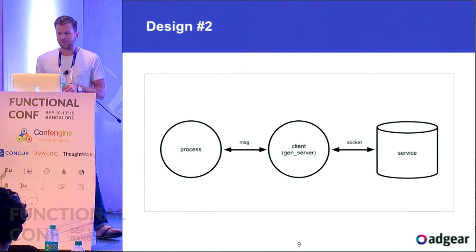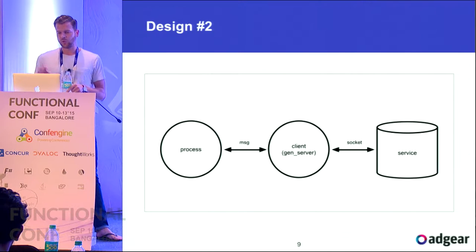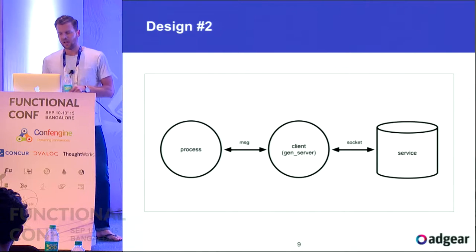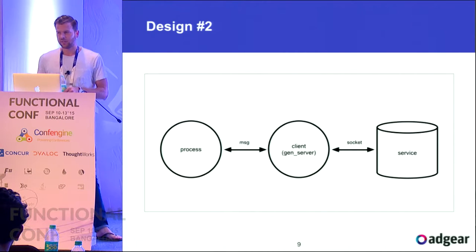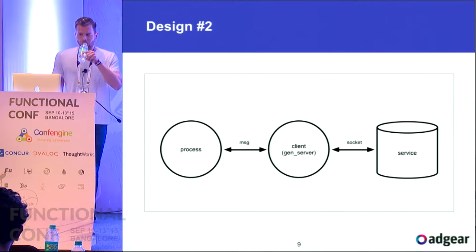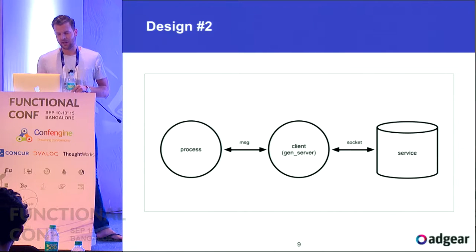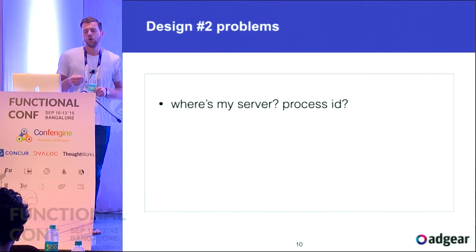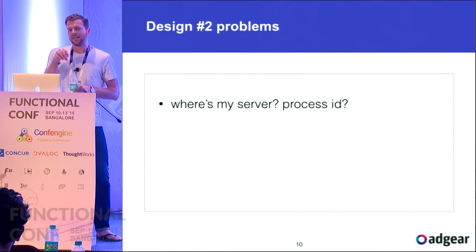To fix this, the second design uses a gen_server, which has state and keeps the socket in its state. This solves the first two problems — no reconnecting and no repeated setup. But now we have a new problem: this server is running somewhere in the VM, but how do we address it? Where is this process ID? We can register a name, but we still need some way that callers can find it.